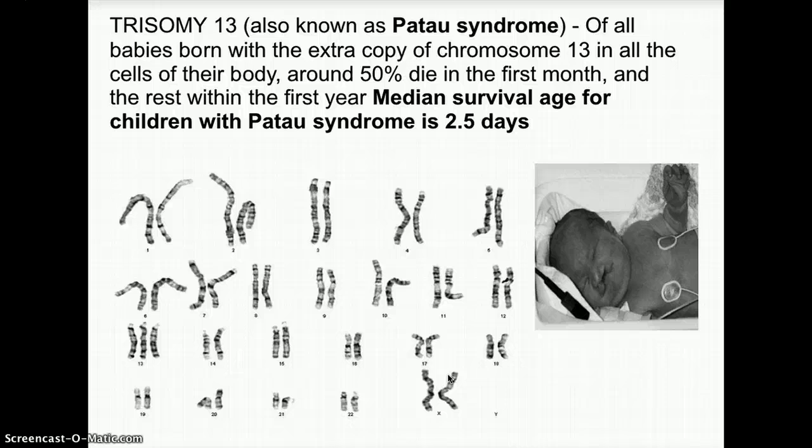Trisomy 13, or Patau syndrome, is extremely severe. Of all babies born with an extra copy of chromosome 13 in all cells of their body, around 50% will die in the first month and the rest within the first year. The median survival age for children with this syndrome is about 2.5 days.